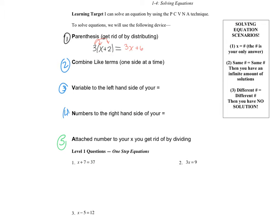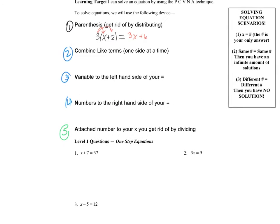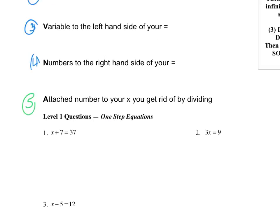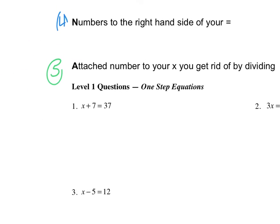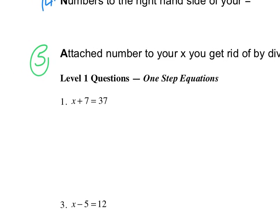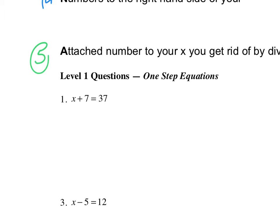So that's our procedure we're going to be using. Make sure you live it, you love it, you laugh it — tattoo it, whatever you need. So we are going to first do level one questions. Level one questions are one-step equations. We typically start out with the equation, and it's only going to be one step. That's not how it is 99% of the time, but for today it'll be 33% of the time. So we have x plus 7 equals 37.